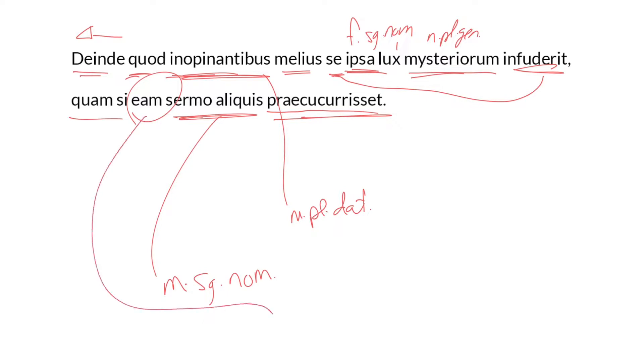So, what is the eam? Well, the eam is the lux, and it's feminine, singular, and accusative. That is, eam is agreeing in gender and number with its antecedent, lux, but differing in case. So, eam, accusative; lux, nominative.